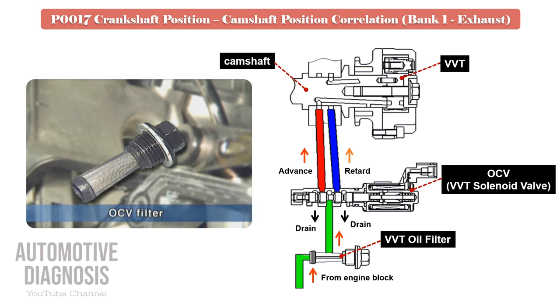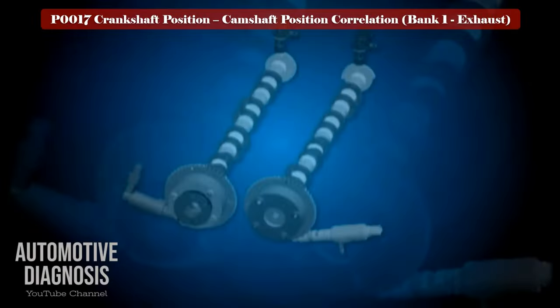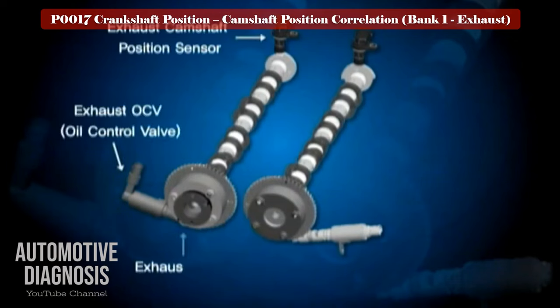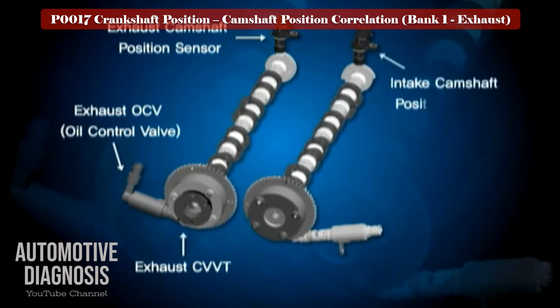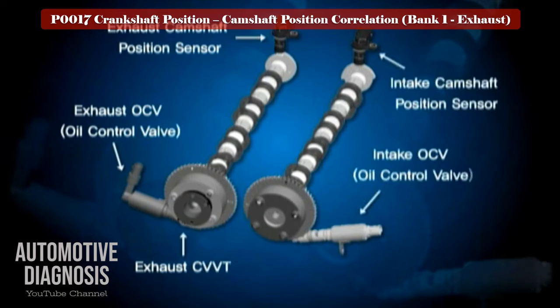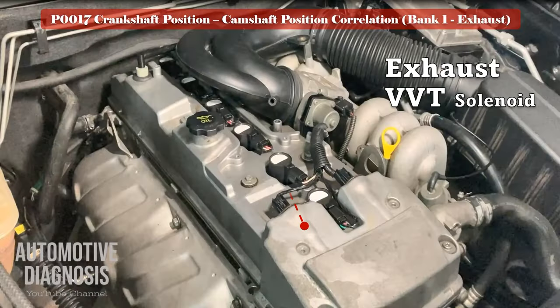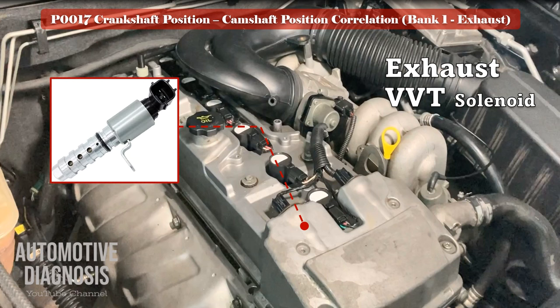Locate the VVT solenoid for further testing. If you have a dual VVT engine, there is a camshaft position sensor, VVT, and VVT solenoid on each camshaft. So locate the exhaust VVT solenoid for this fault code. To start testing the OCV, it is very important to review the OCV wiring diagram.